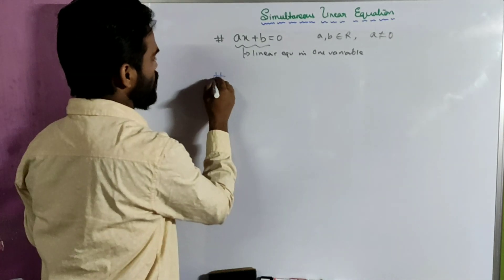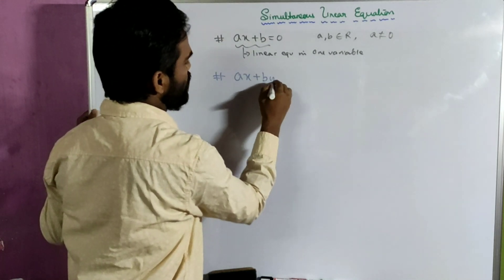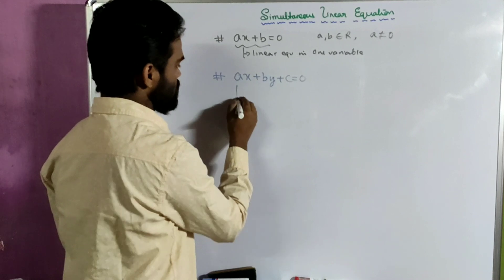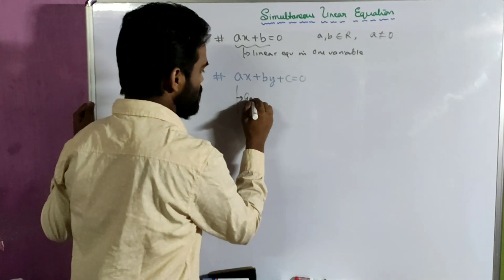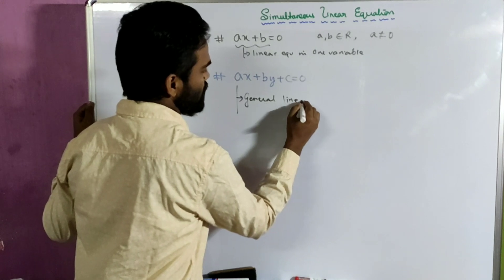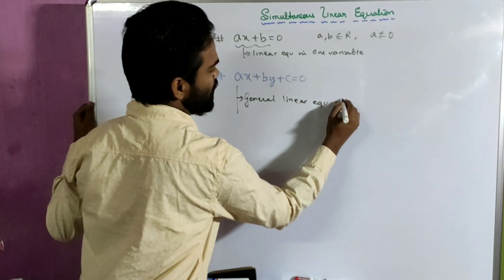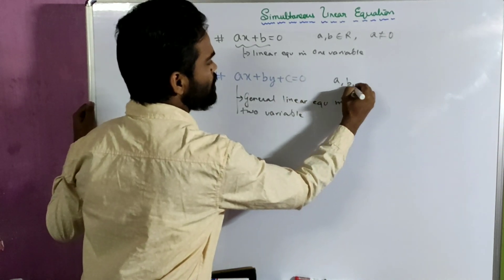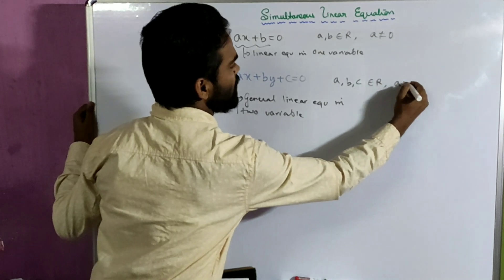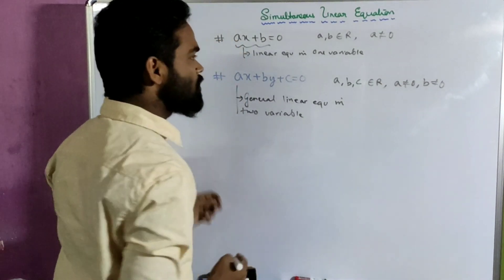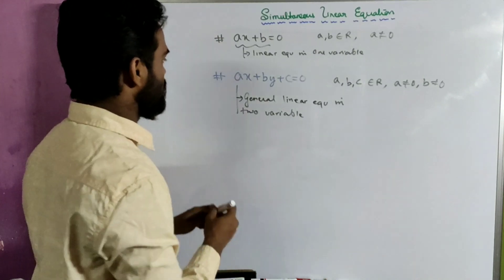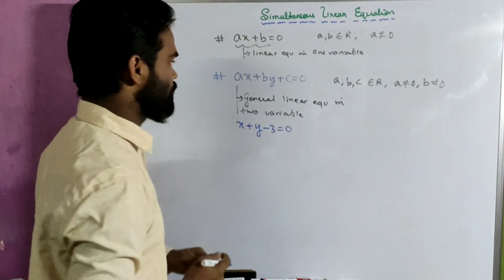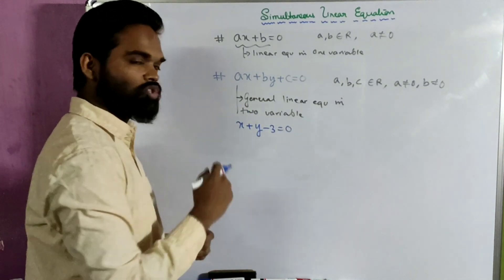Now take another case. Suppose I write ax plus dy plus c equals to 0. Now look carefully — there are two unknowns, two variables. So this is the general linear equation in two variables. Over here, a, b, and c belong to real numbers, a not equal to 0, b not equal to 0. For example, if you take a case like x plus y minus 3 equals to 0, this is your general linear equation in two variables x and y.